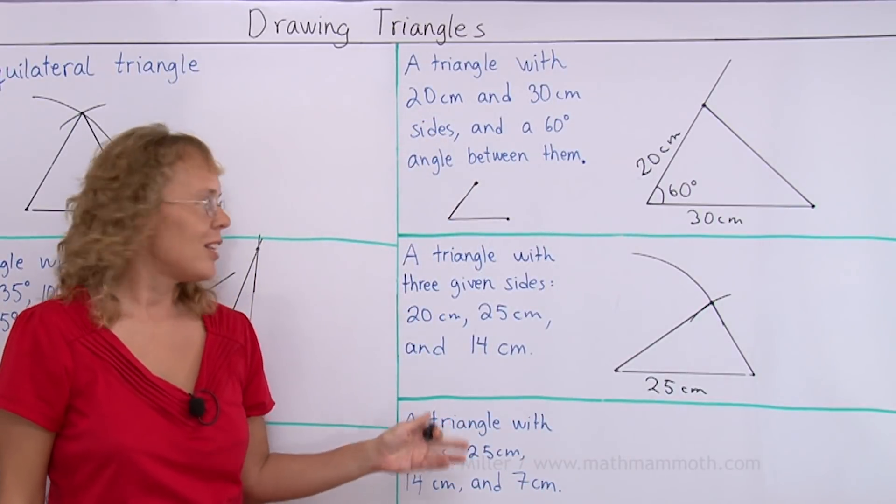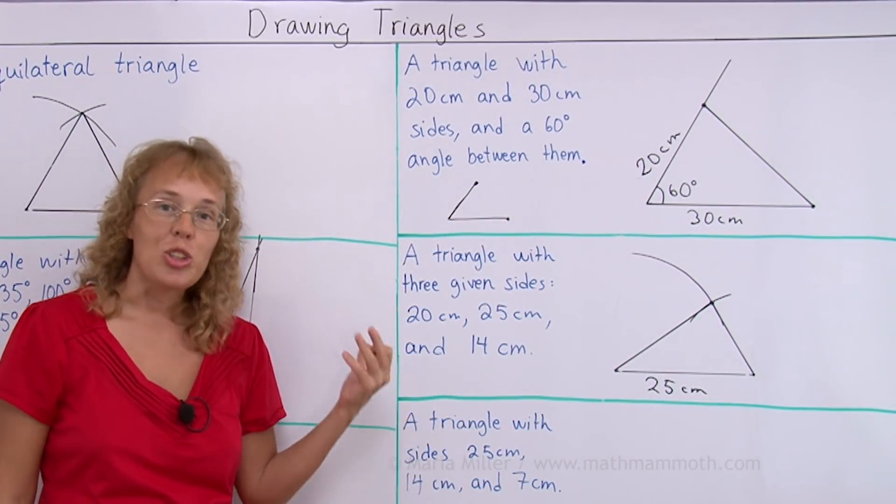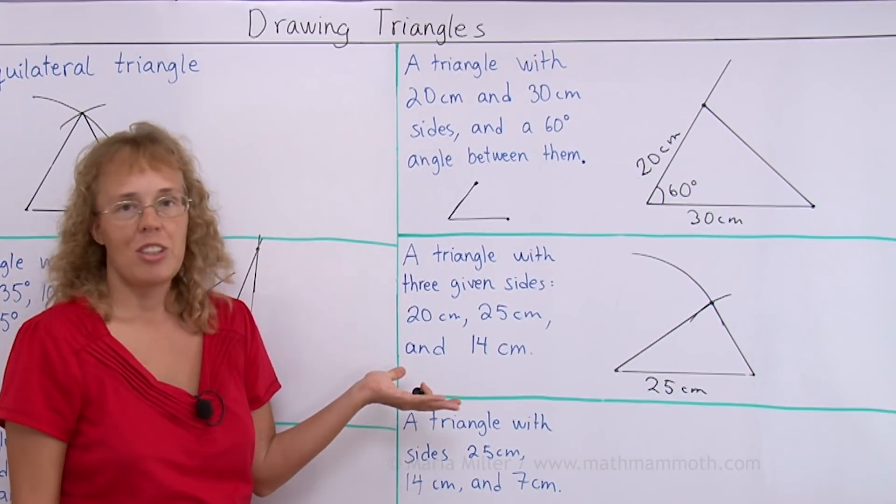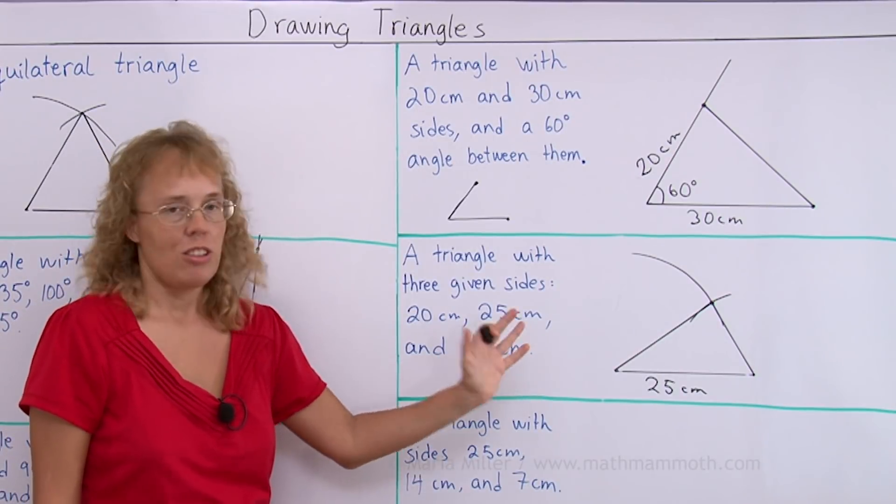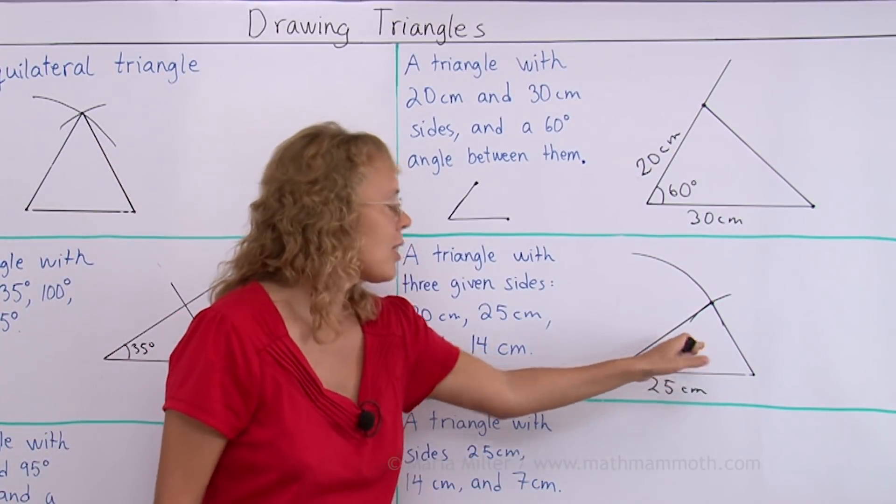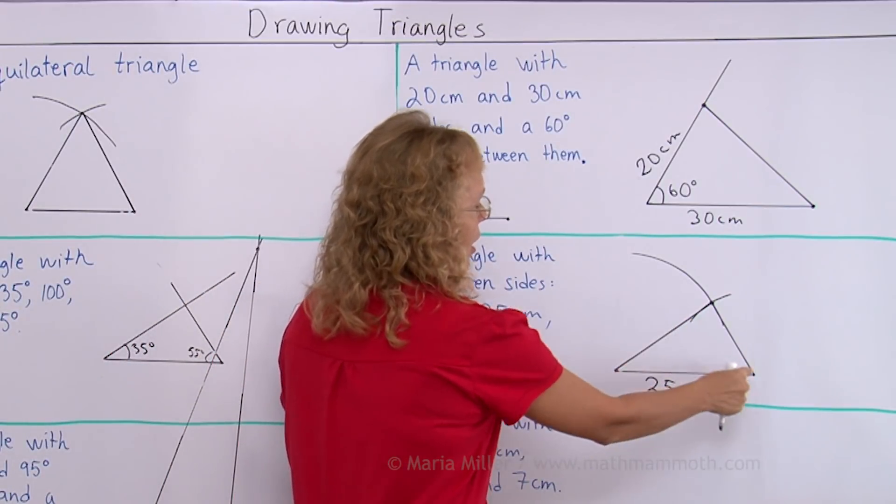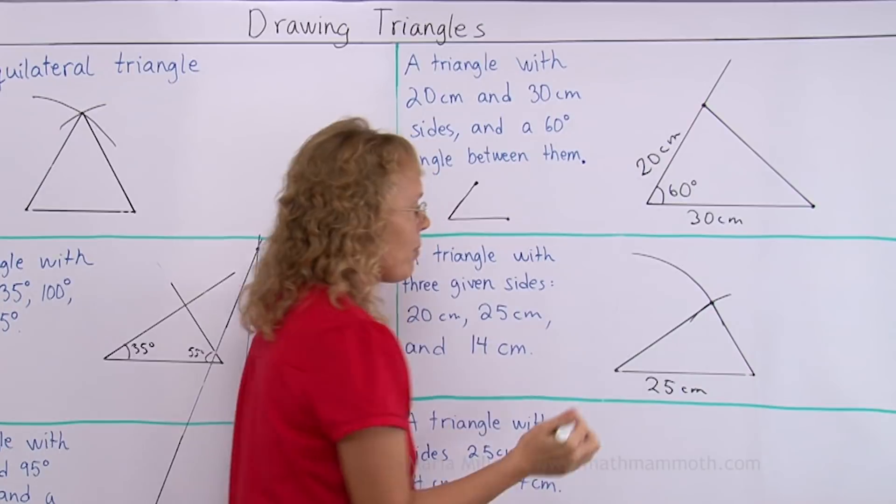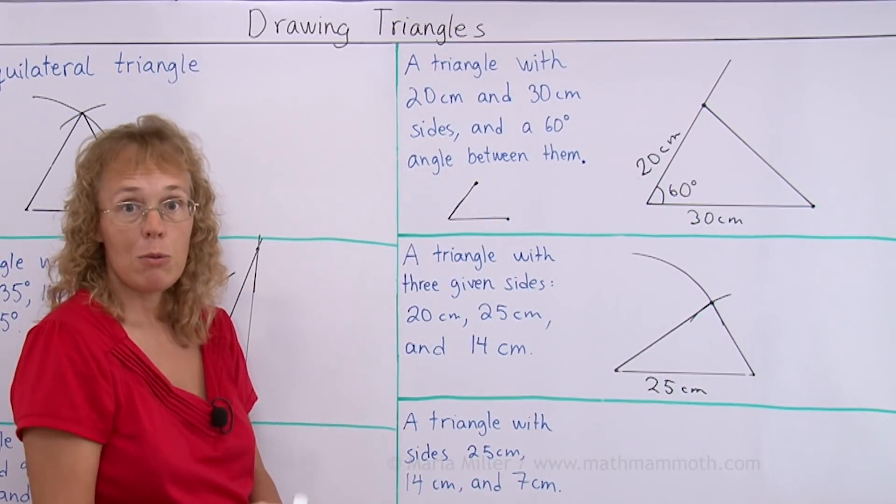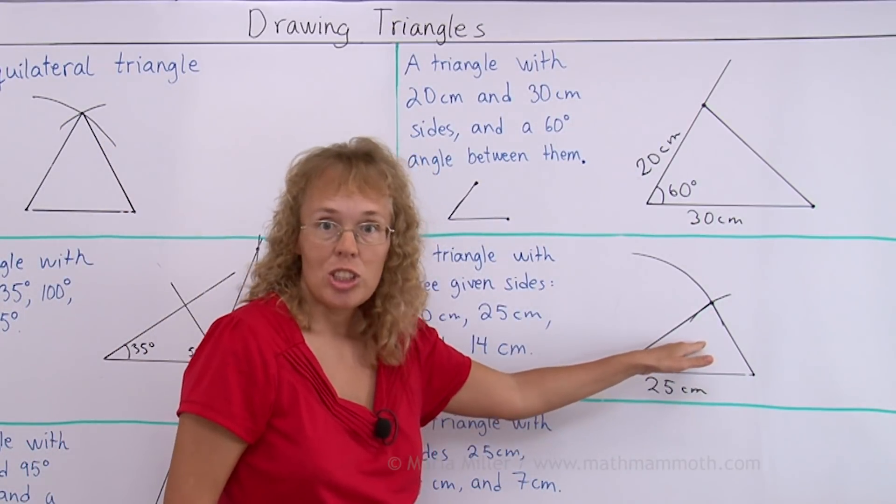And now just draw the sides in. Again I hope you can see that this information defined a unique triangle. I could not have changed anything and gotten a different one. It's always going to be this kind. I could have changed the 14 centimeters here and then the 20 centimeters here. But the resulting triangle would be like a mirror image of this one. It is actually congruent to this triangle.